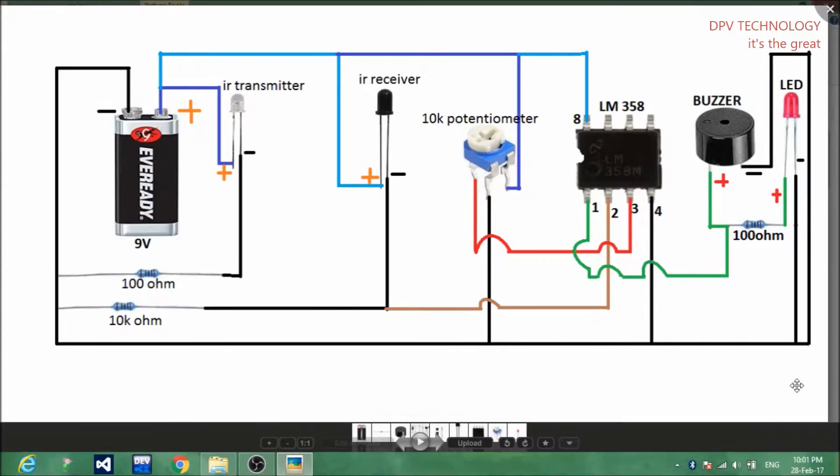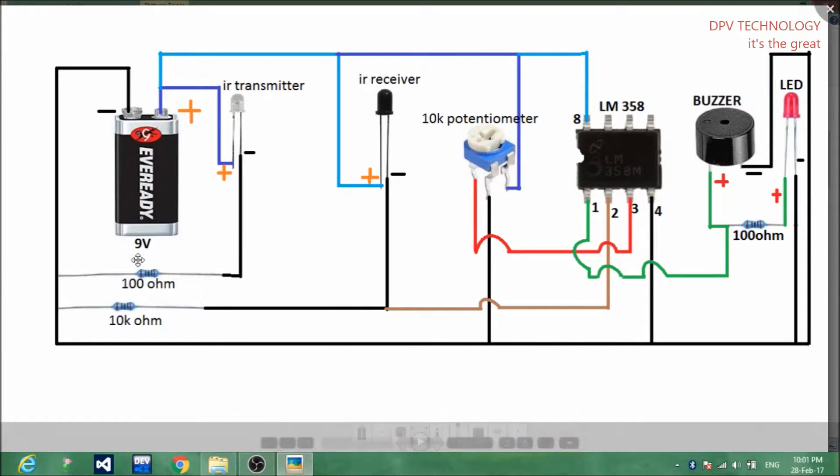This is the circuit diagram for this project. You will need one 9-volt battery, one IR transmitter LED, one IR receiver which is also a type of LED, and a 10k potentiometer. You have to adjust this potentiometer.